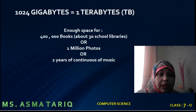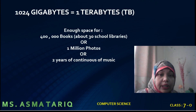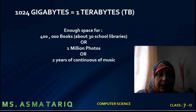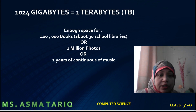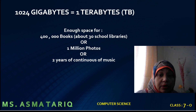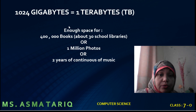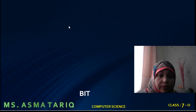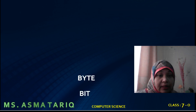1024 gigabytes is equal to one terabyte (TB). This is enough space for four hundred thousand books — about 30 school libraries — or one million photographs, or two years of continuous music stored in computer.